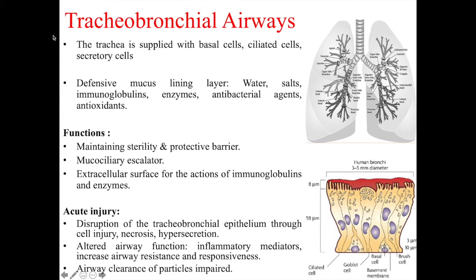The tracheobronchial region is next in the air pathway. The trachea is supplied with basal cells, ciliated cells, and secretory cells, as shown in the diagram. A defensive mucus lining layer consists of water, salts, immunoglobulins, enzymes, antibacterial agents, and antioxidants. These are used to prevent particles and microorganisms from causing damage — their functions are to maintain sterility and act as a protective barrier. A mucociliary escalator involves small cilia on epithelial cells beating slowly and moving trapped particles up the airway, and provides an extracellular surface for immunoglobulins and enzymes.